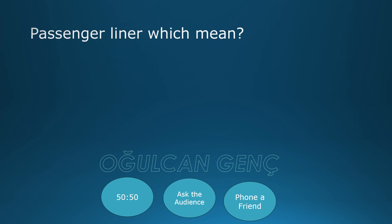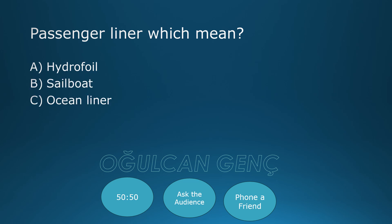Passenger liner — which means? Hydrofoil, Sailboat, Ocean liner, Submarine. Correct answer: Ocean liner, C.